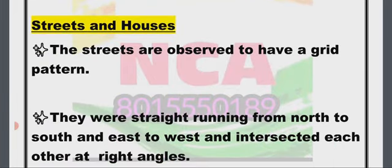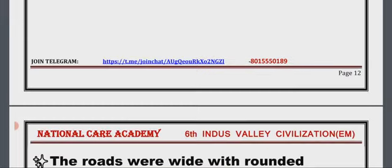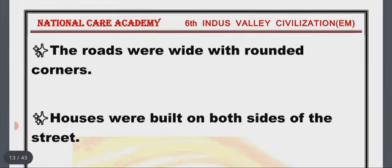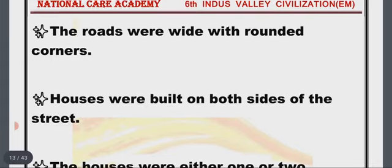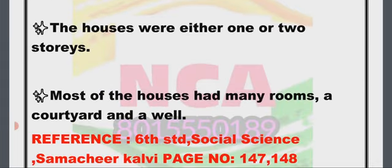Streets and houses: The streets are observed to have a grid pattern — they were straight, running from north to south and east to west, and intersected each other at right angles. The roads were wide with rounded corners. Houses were built on both sides of the street and were either one or two stories.